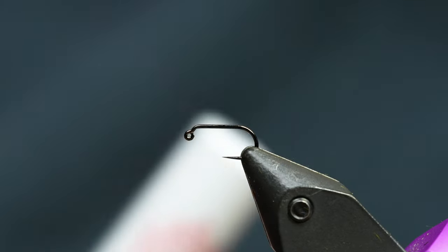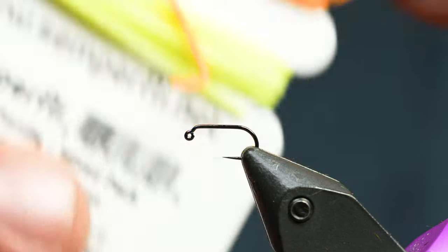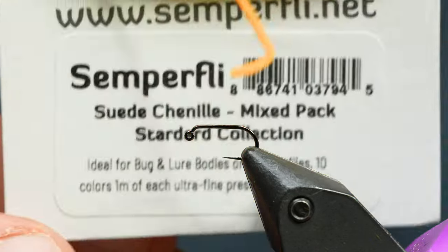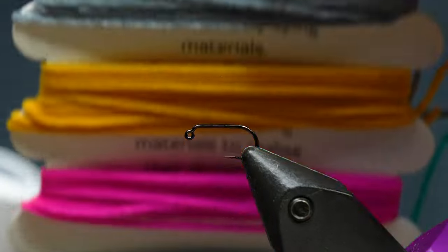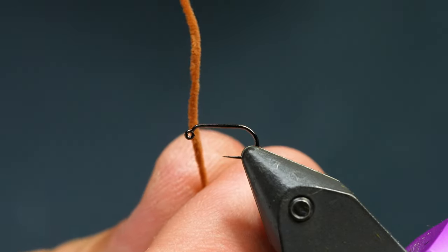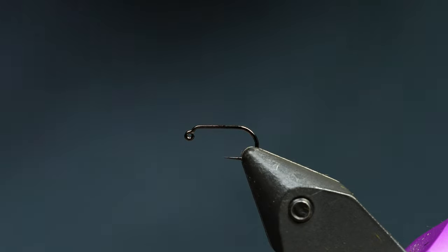This stuff is really cool. This is suede chenille from Semperfly and this is how I like to buy it. It comes in all these colors and I'm going to show you how to make a worm out of it and a jig hook. Super easy.